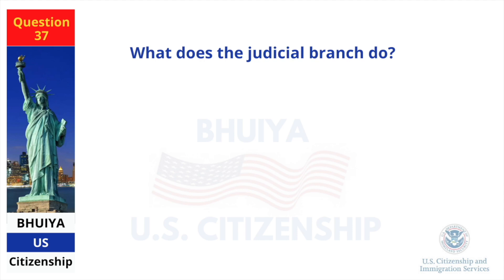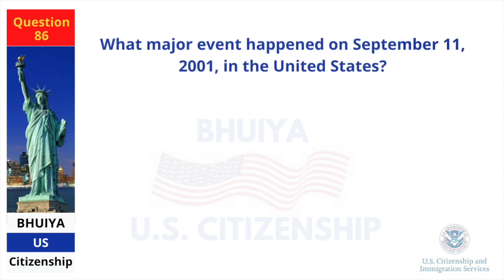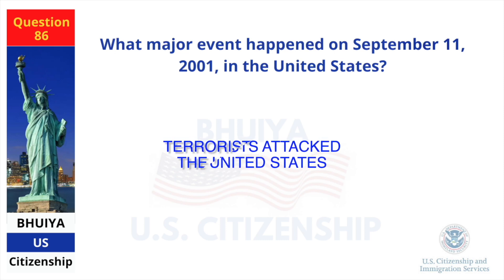What does the judicial branch do? Reviews laws. What major event happened on September 11, 2001 in the United States? Terrorists attacked the United States.